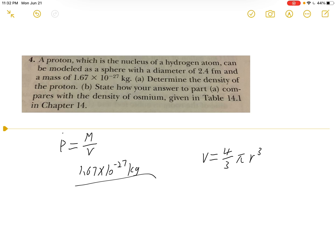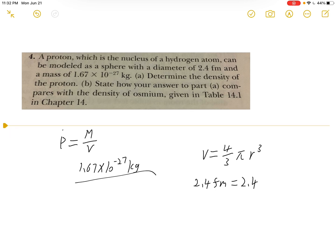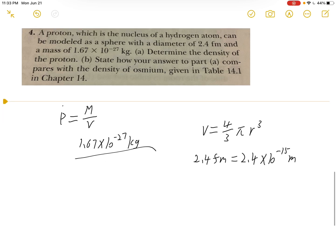So they give us a diameter in 2.4 fm. So 2.4 fm equals 2.4 femtometers, which equals 2.4 times 10 to the negative 15 meter. And that will be the diameter. So we also need to divide this by 2 to get the radius.